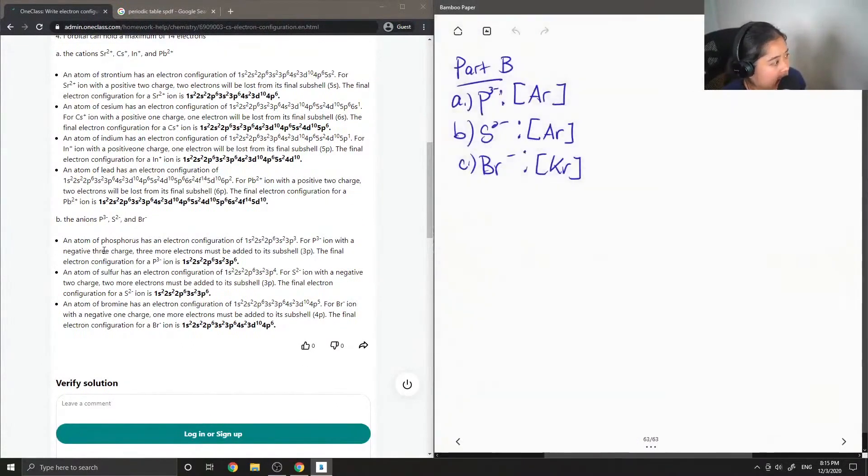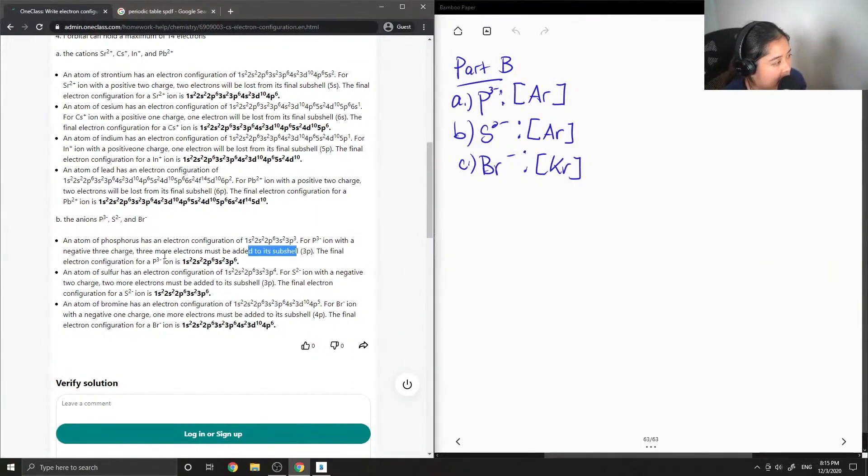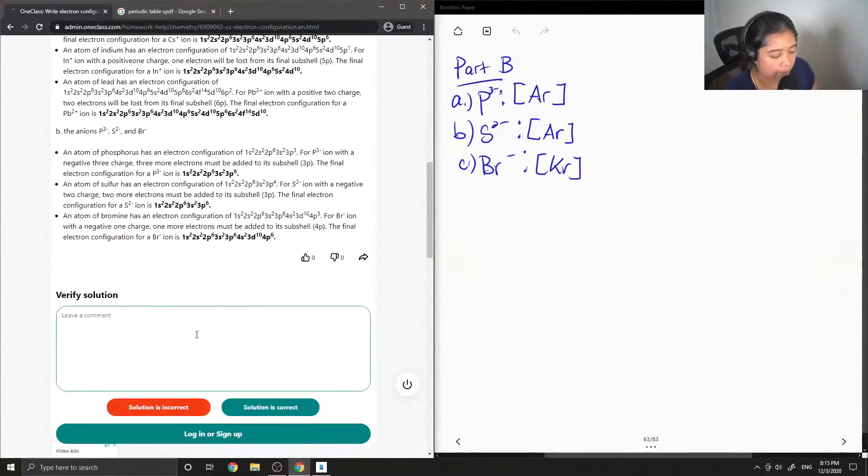For the anions, an atom of phosphorus. So for phosphorus, 3 minus. More electrons must be added to its subshell. The final electron configuration is 1s2, 2s2, 2p6, 3s2, 3p6. So this is the same as argon. Sulfur has the same electron configuration equal to argon. And lastly, the bromine with a negative 1 charge has the same electron configuration as krypton. So I can say that this solution is correct. Alright.